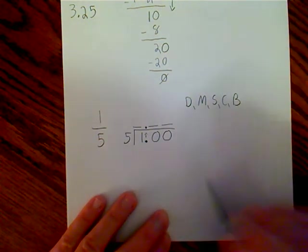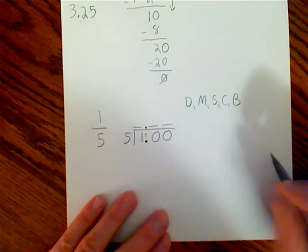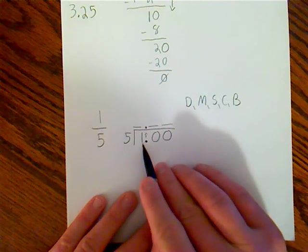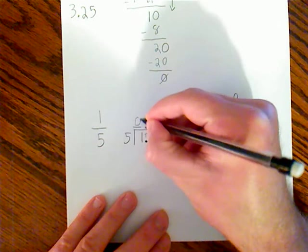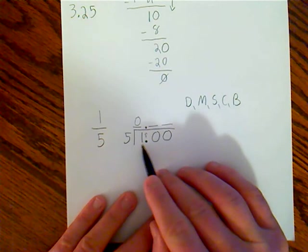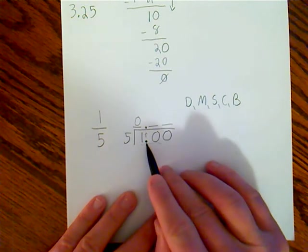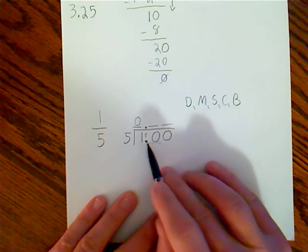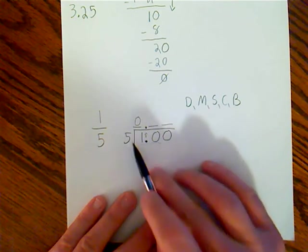We've set it up, we are ready to divide. 5 goes into 1 zero times, so that means I need to move on to the double digit. So now I'm looking at the 10 here. It looks a little confusing because there's a decimal place, but we're treating the 1 and the 0 like a 10. 5 goes into 10 two times.